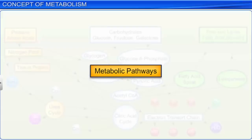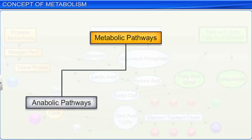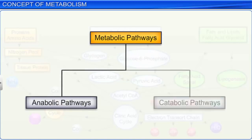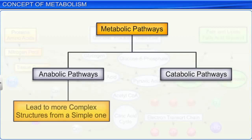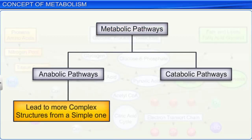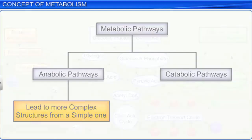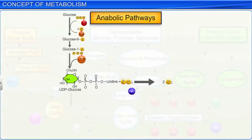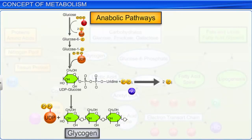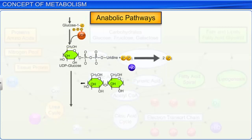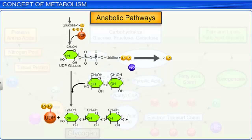Metabolic pathways can be divided into two categories: anabolic pathways and catabolic pathways. Anabolic or biosynthetic pathways lead to more complex structures from a simple one. For example, the process of glycogenesis, which involves the biosynthesis of glycogen from glucose. In other words, glucose molecules are added to chains of glycogen for storage.